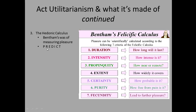Most of the work around the hedonic calculus is memorising all seven elements off by heart. If the mnemonic PREDICT doesn't work for you, make up your own way of remembering them. You need to know all seven if you want to pass the exam.